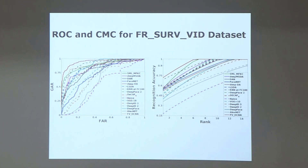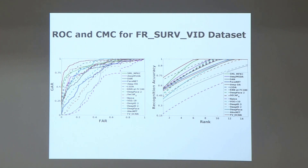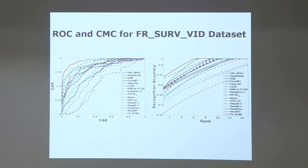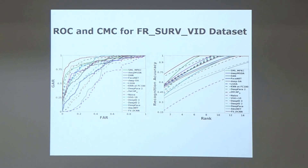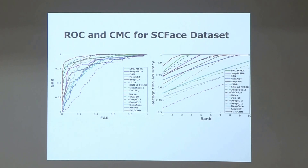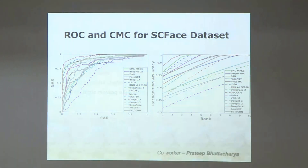Our methods include deep networks alone, domain adaptation alone, and domain adaptation combined with deep networks — these are the top three performers. We've compared against about a dozen methods across three surveillance databases. This work is currently under review at CVPR 2017.